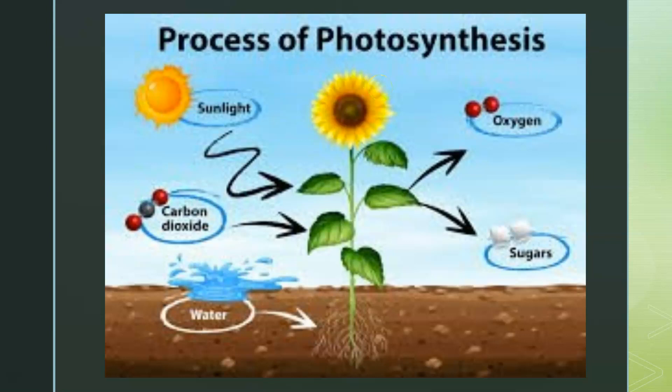Remember that word, autotroph. It's an organism that can make its own food. So when these three things go into the autotroph, into the plant, out comes oxygen and sugar for food. That's the overview of photosynthesis. Not hard, right?